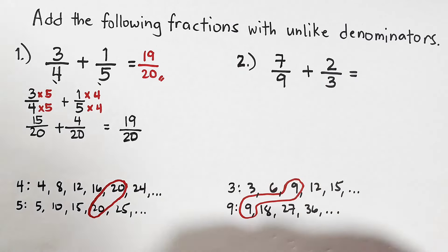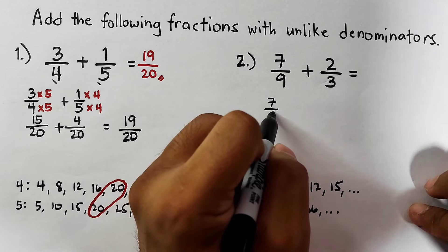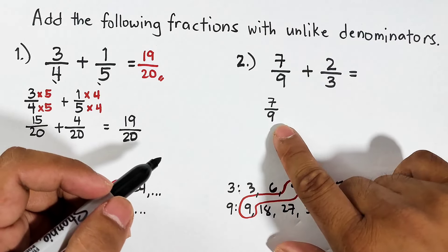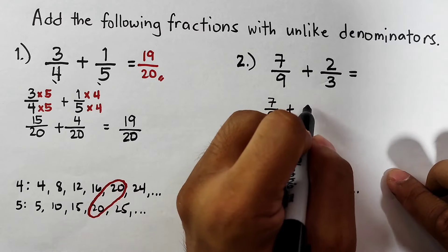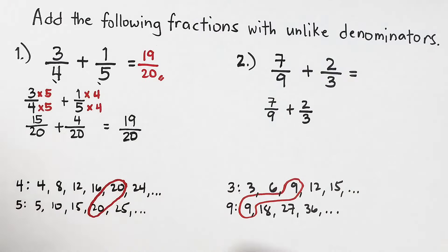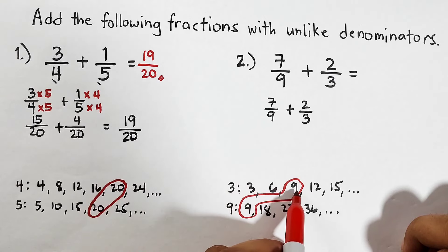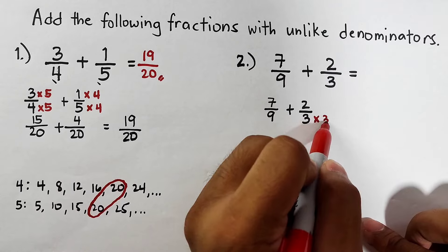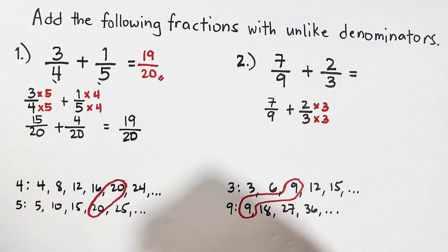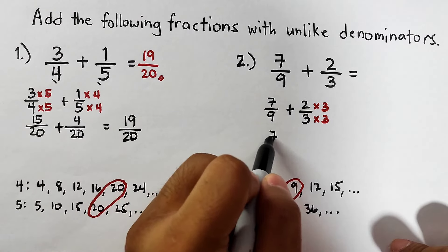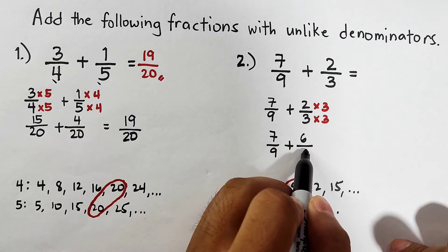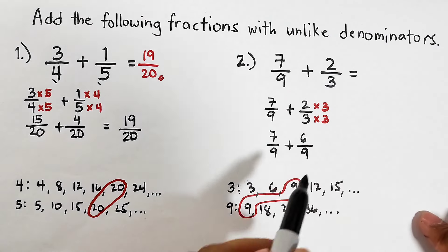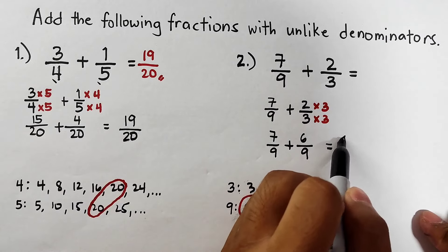We think about what to do with the denominators. For seven over nine, since the least common multiple is nine, we don't need to multiply — simply copy seven over nine. For two over three, we multiply both numerator and denominator by three, giving us two times three which is six, over three times three which is nine. Now we have the same denominators — seven plus six is thirteen over nine.